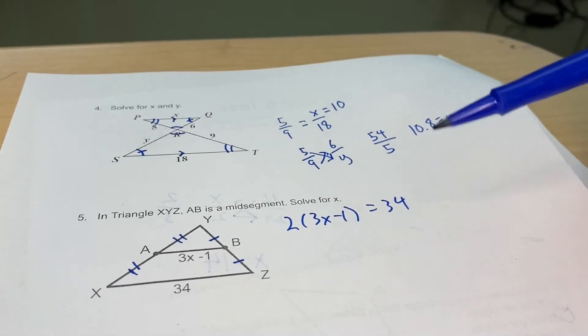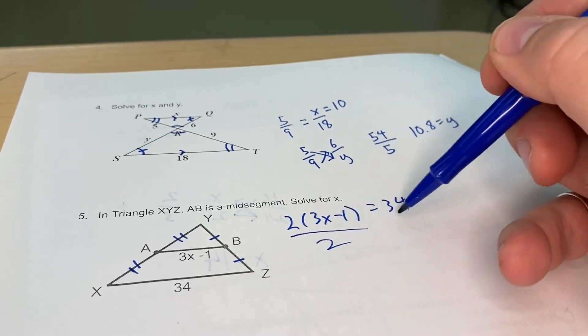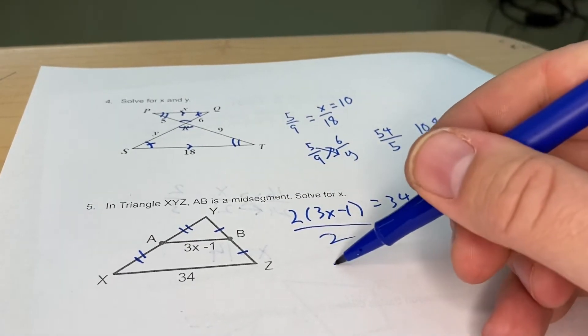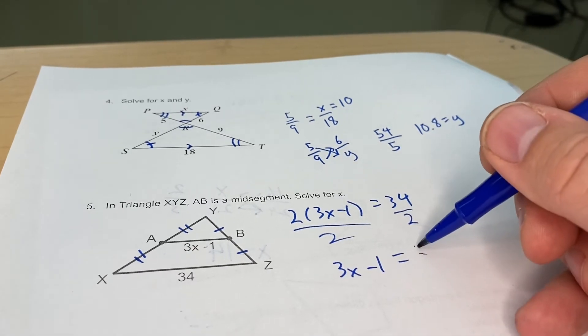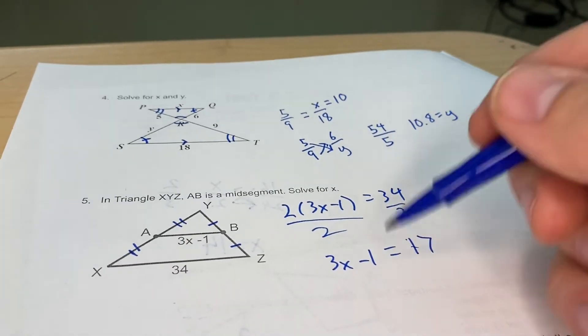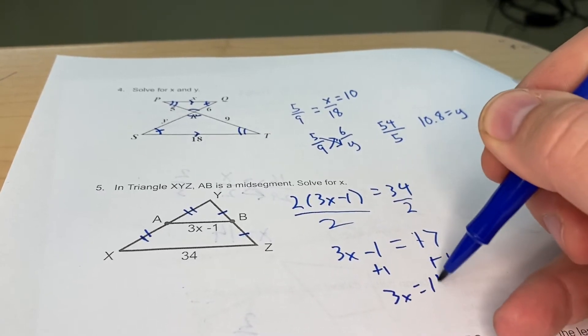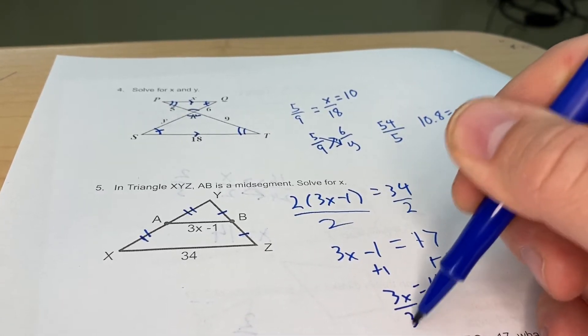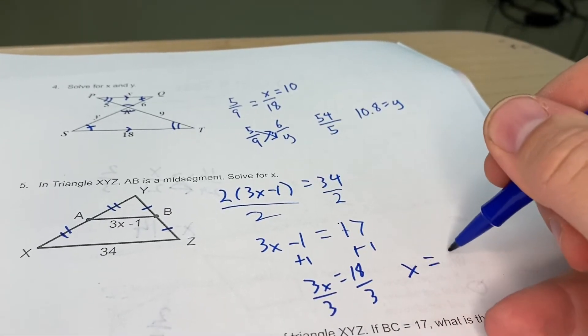So I can just solve 3x minus 1 is equal to 17. I add 1, I add 1. That's 3x is equal to 18. I divide by 3 and I get x is going to be equal to 6.